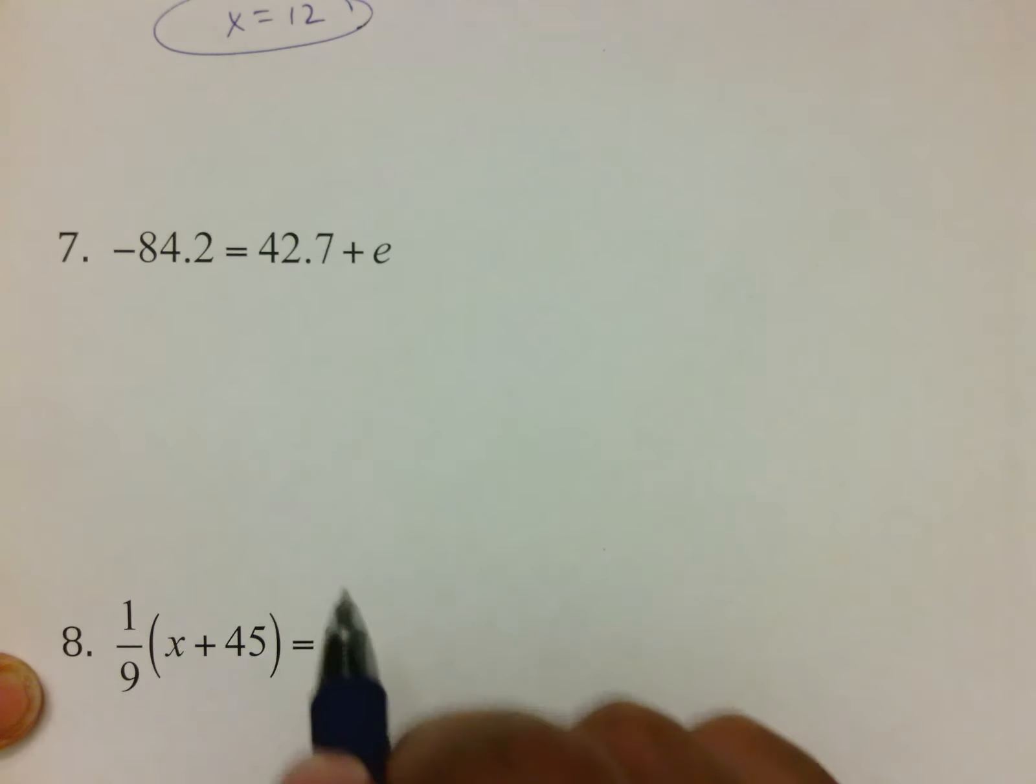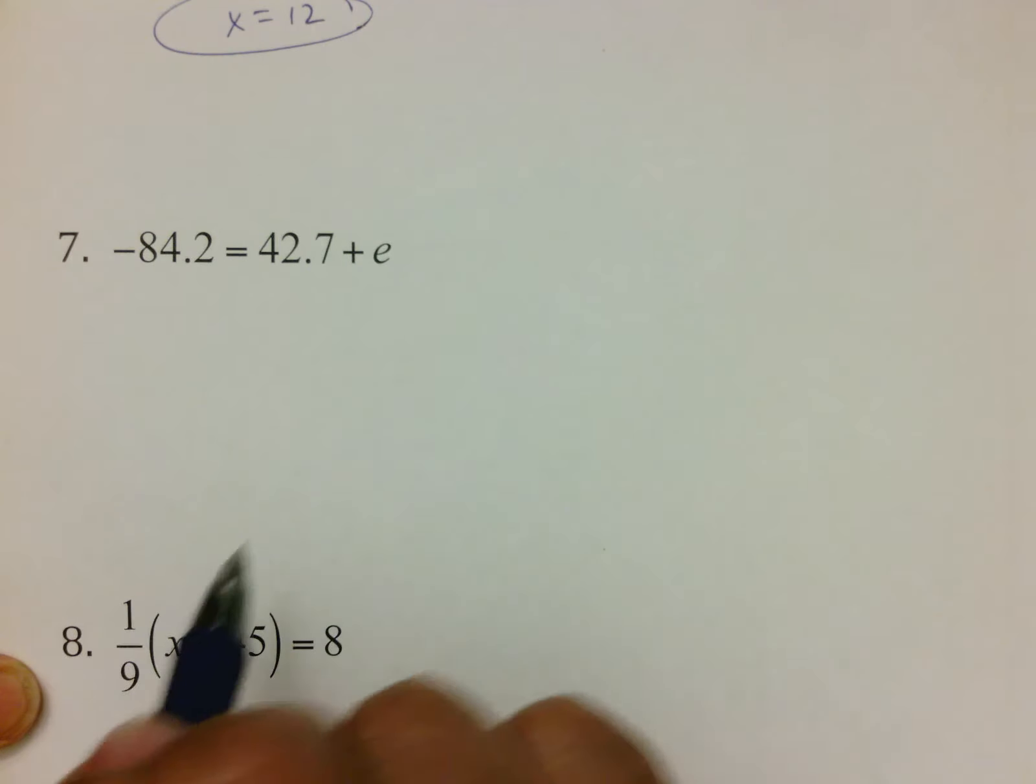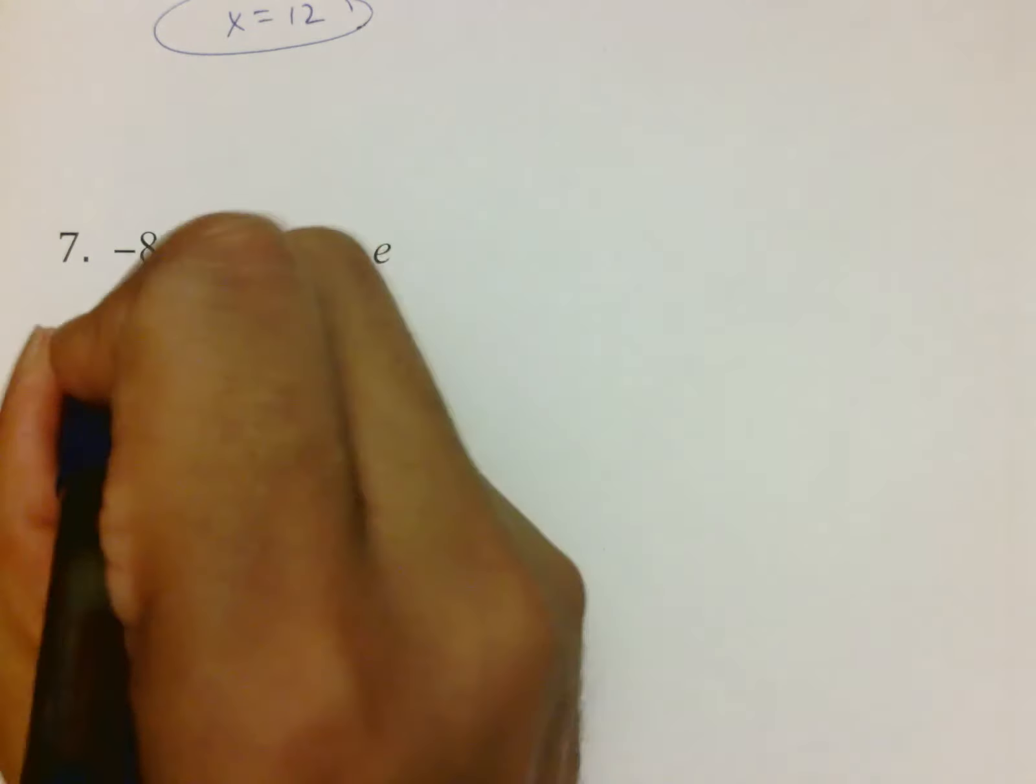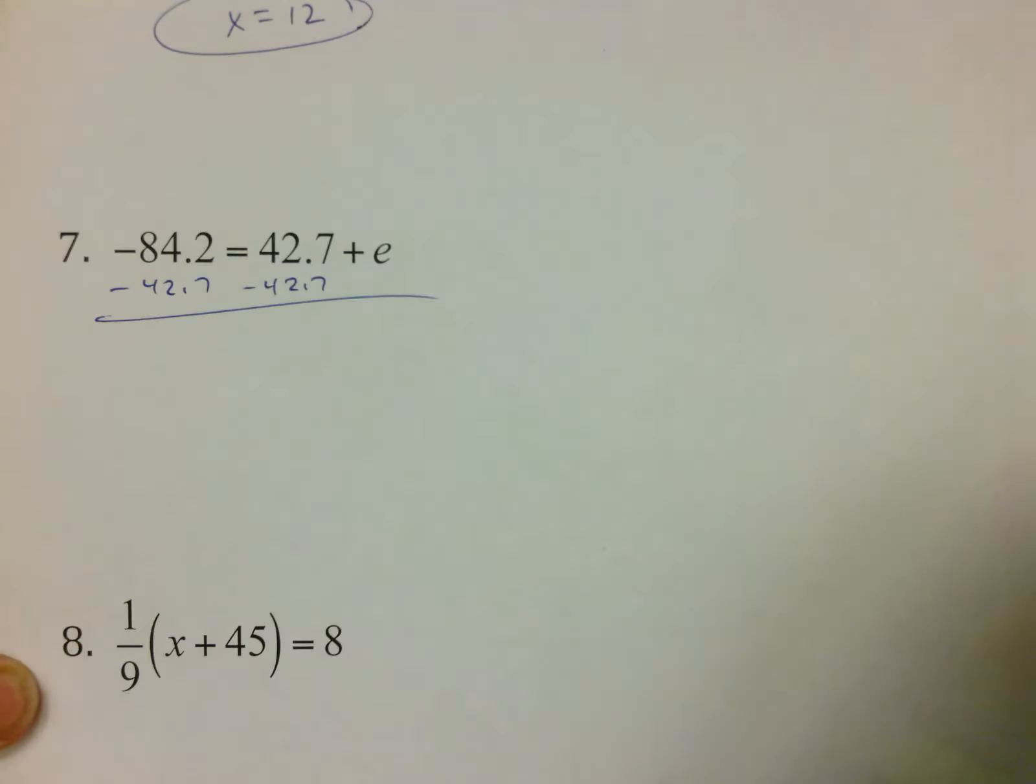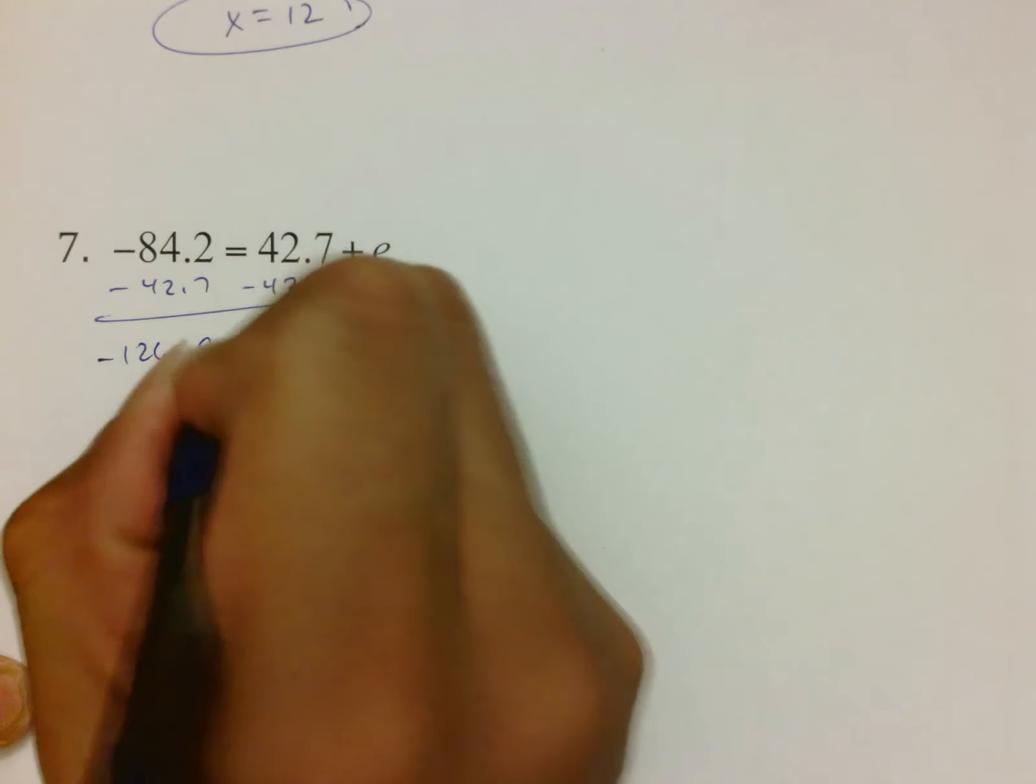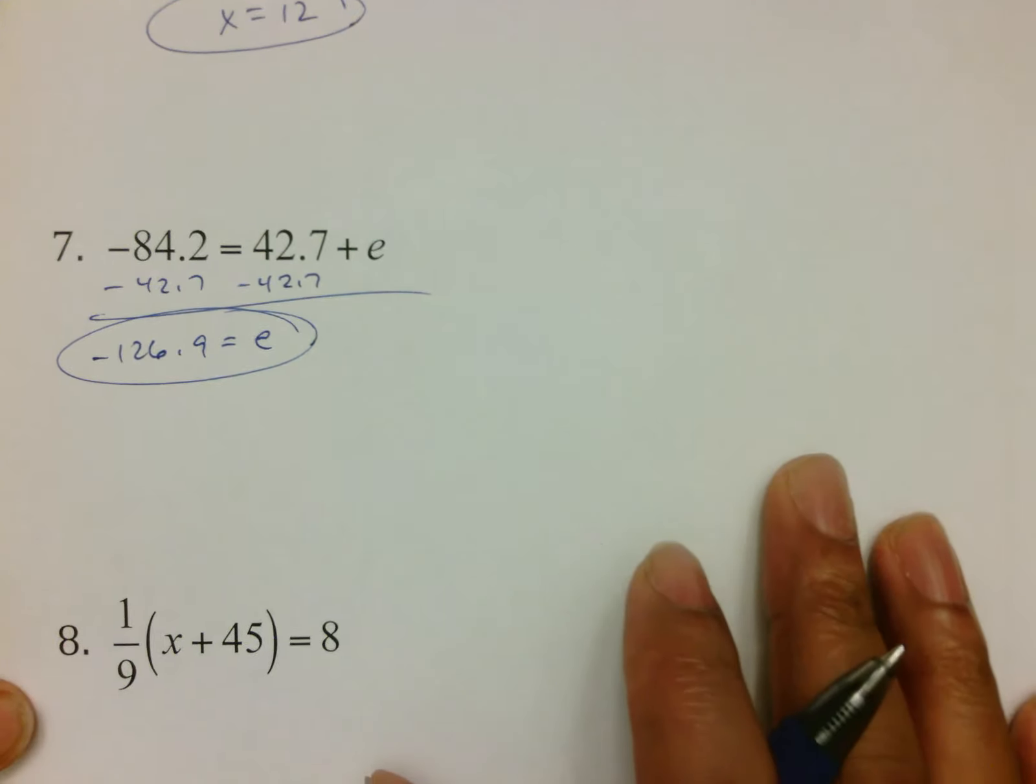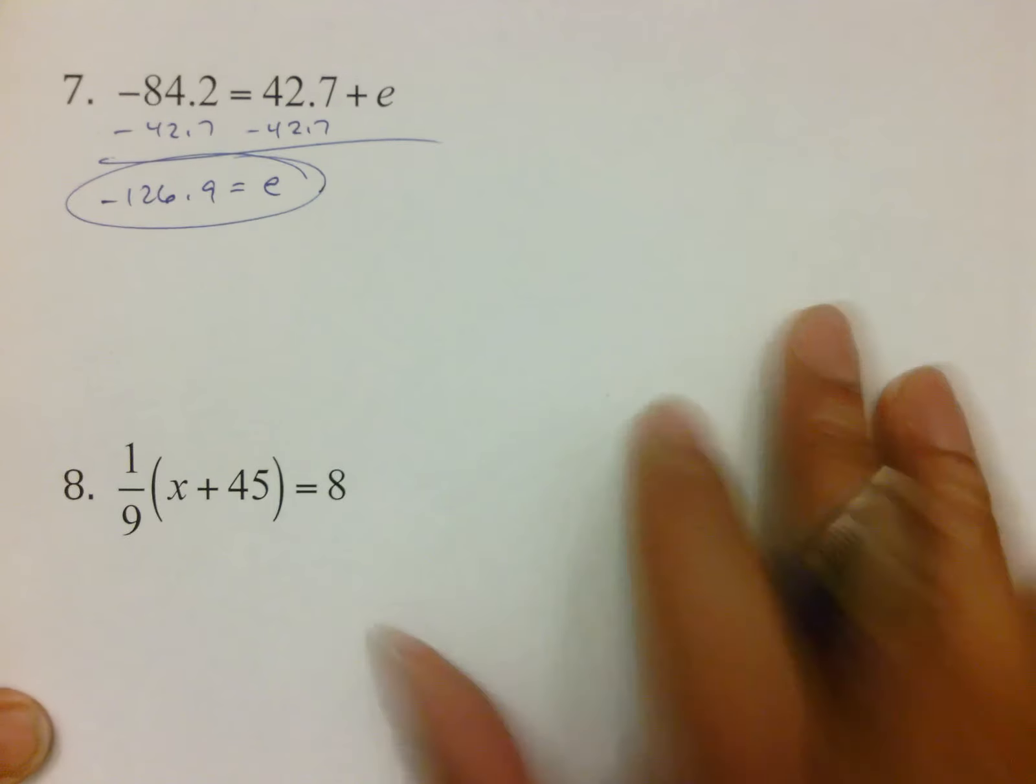Negative 84.2 equals 42.7 plus e. Here we've got to subtract 42.7 because it's positive. Just make sure you type it in. Plus negative 42.7, which is negative 126.9 for your answer of e.